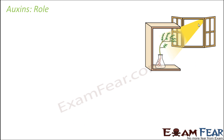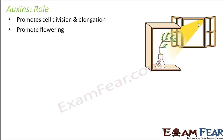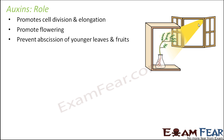Let us look at the role of auxins. Obviously they promote cell division and elongation, and that is how they promote growth. They promote flowering. They also prevent abscission of younger leaves and fruits. Abscission means the shedding off — the early shedding of leaves and fruits. So by preventing this shedding, auxin helps the plant to retain all important parts like leaves, fruits, and flowers, which in turn help in growth.